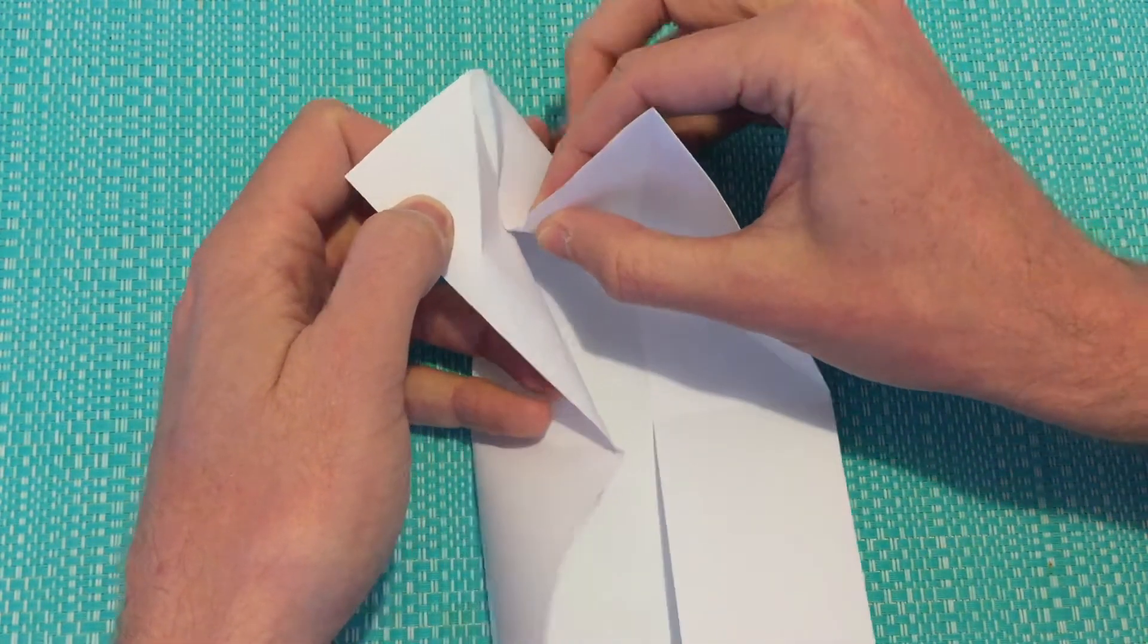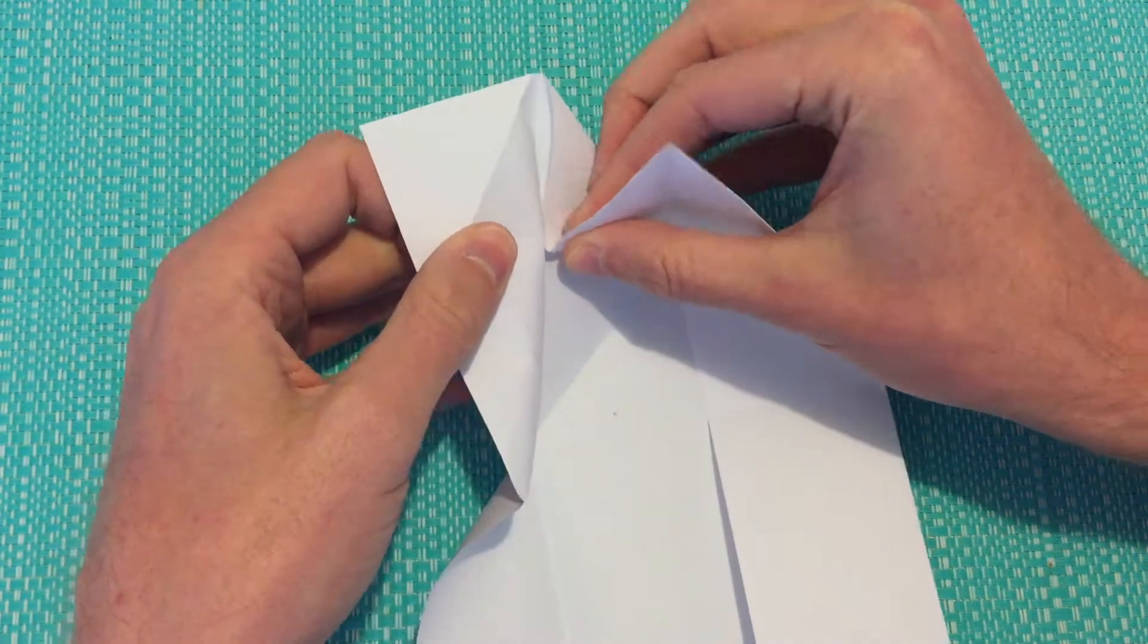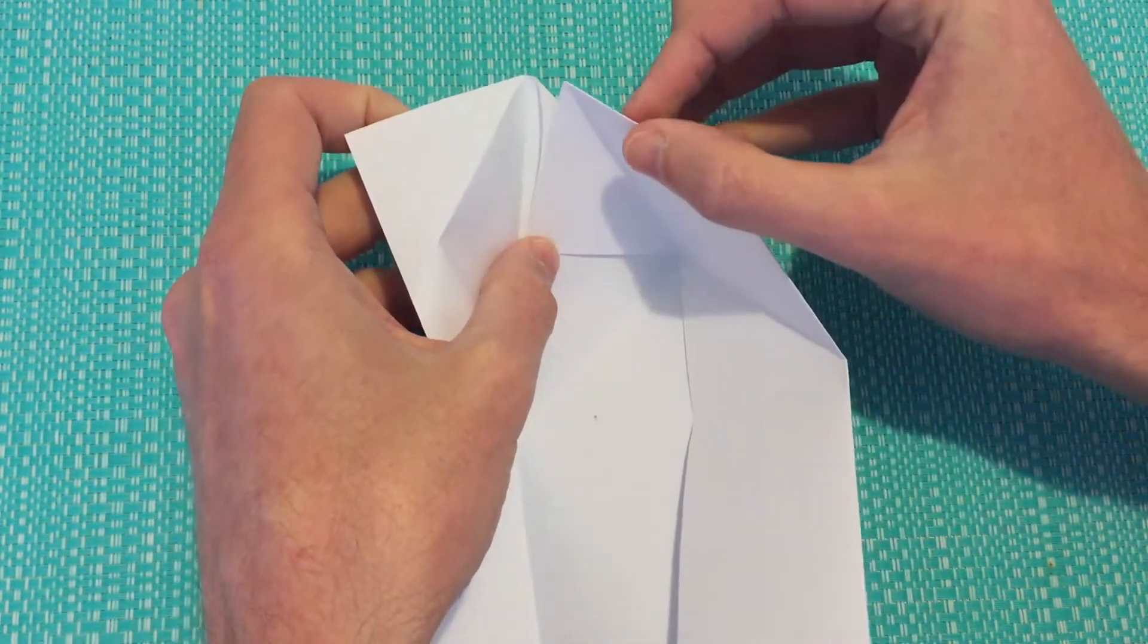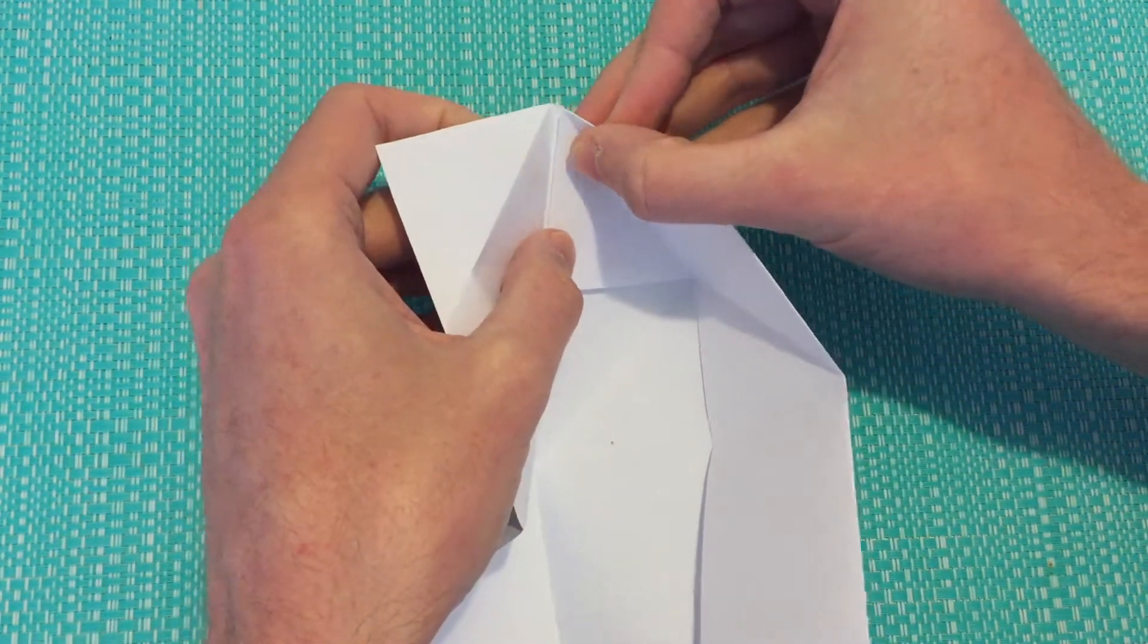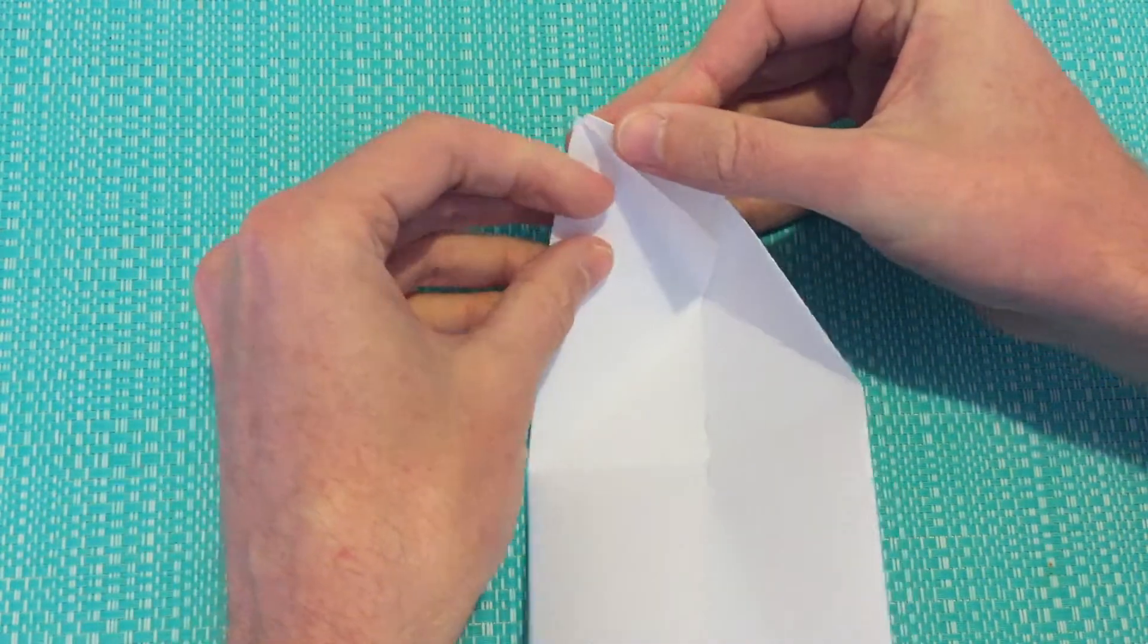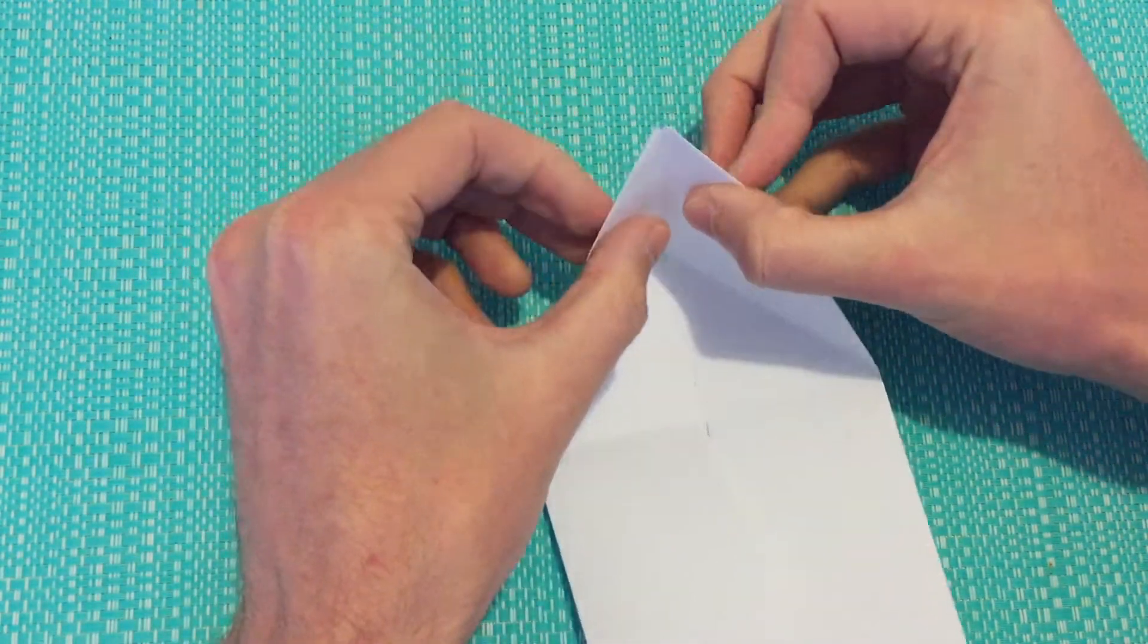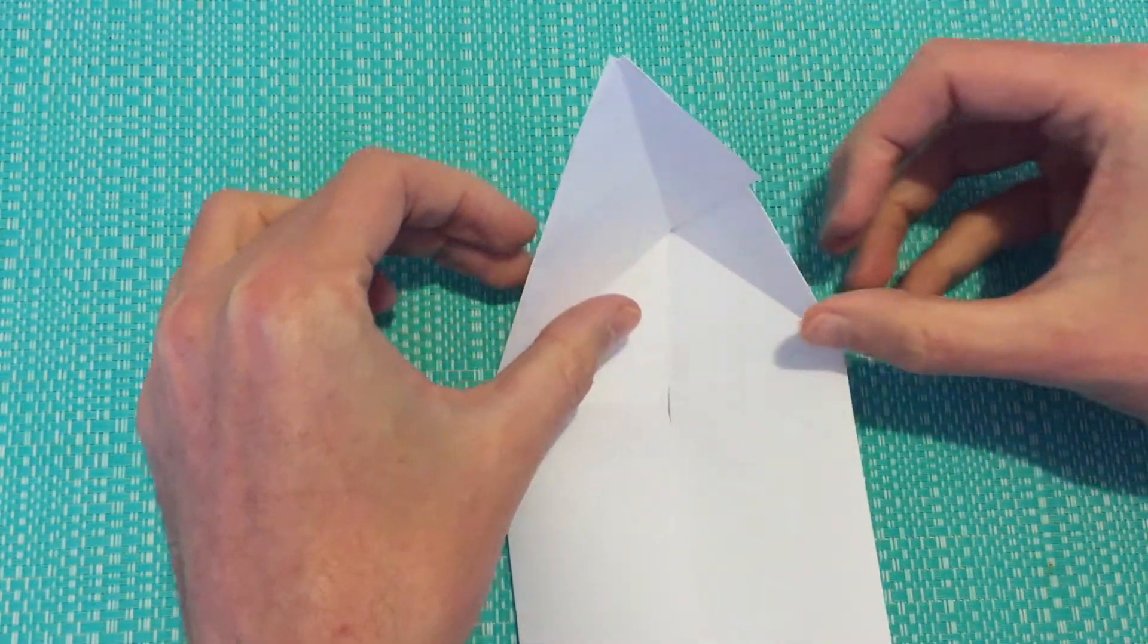So bring across that top and bring in that right corner and then press that flap back down over the top, leaving us with the triangle.